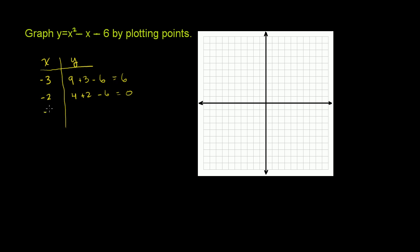Then if x equals negative 1, we have negative 1 squared which is positive 1, minus negative 1 which is another positive 1, then we have minus 6. 2 minus 6 is equal to negative 4.